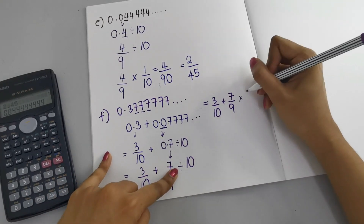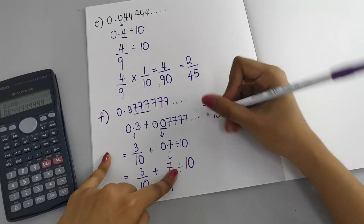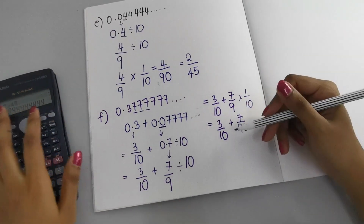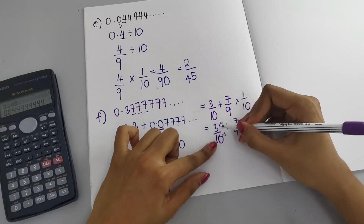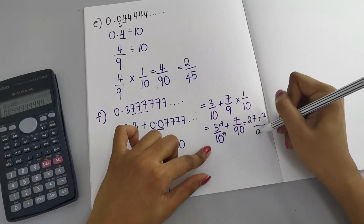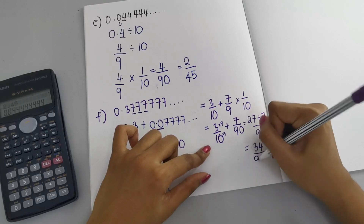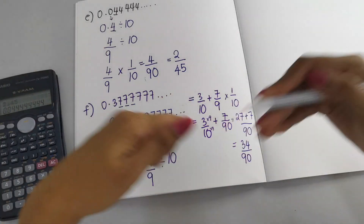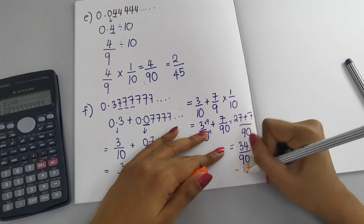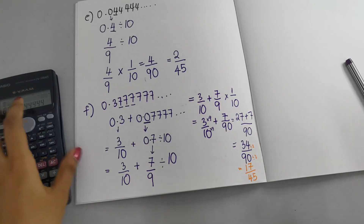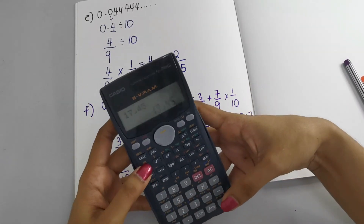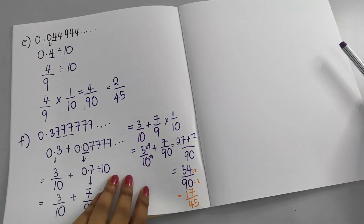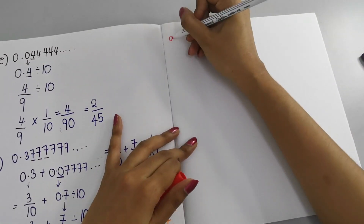Changing the division to multiplication: 3/10 + 7/9 × 1/10 = 3/10 + 7/90. To add these, convert 3/10 to 27/90, then 27/90 + 7/90 = 34/90. Simplify by dividing both by 2: we get 17/45. Check: 17 ÷ 45 = 0.377777..., correct.